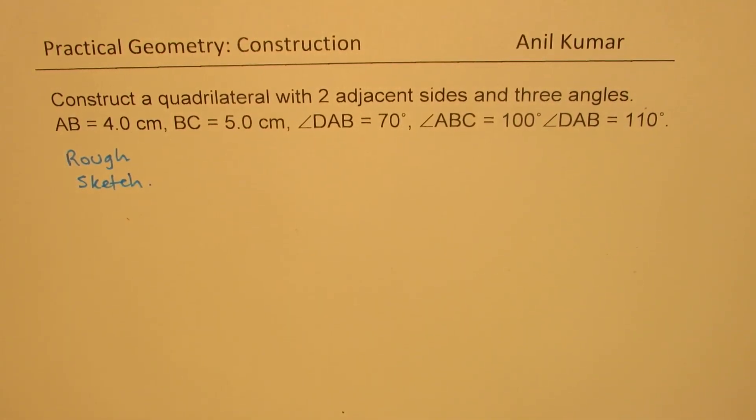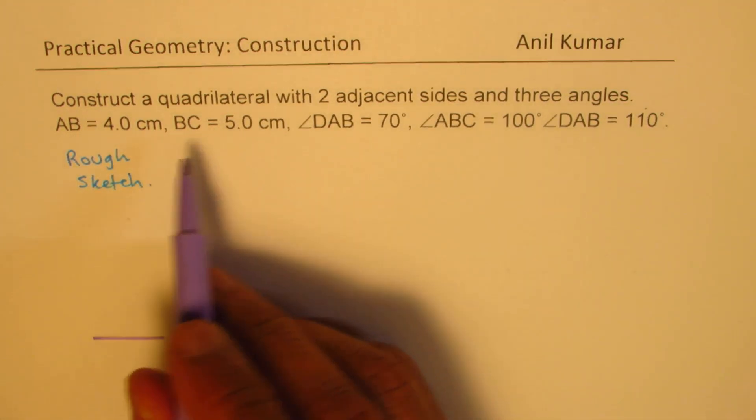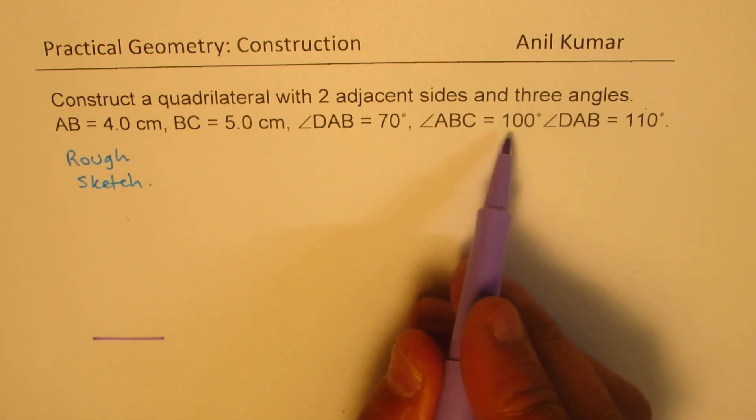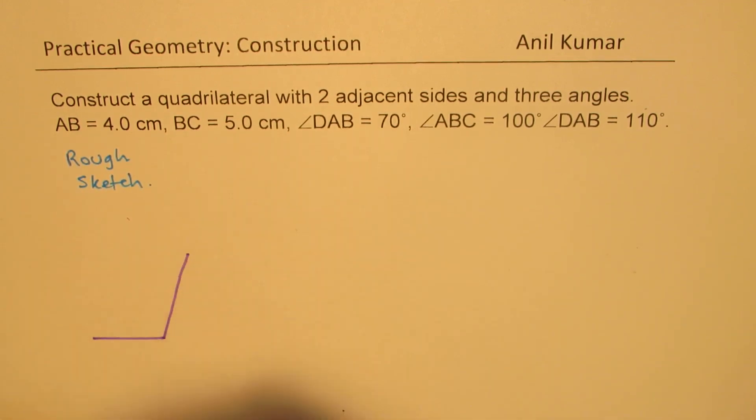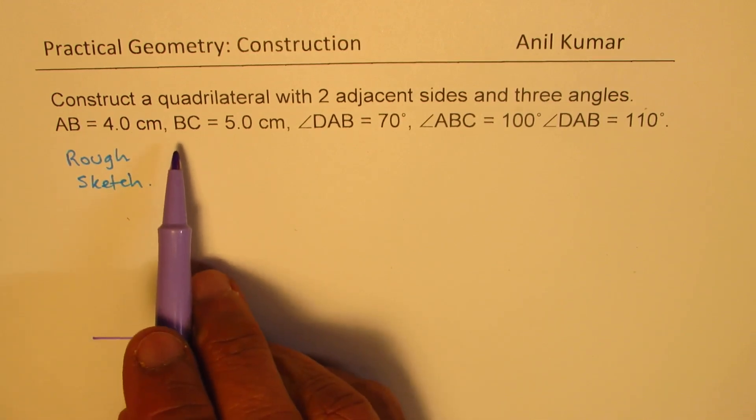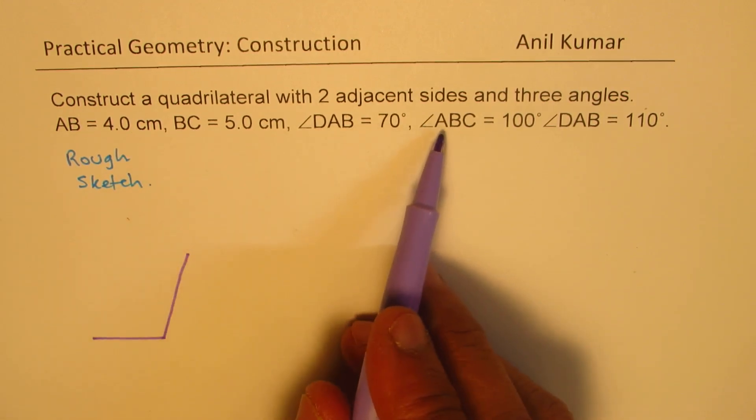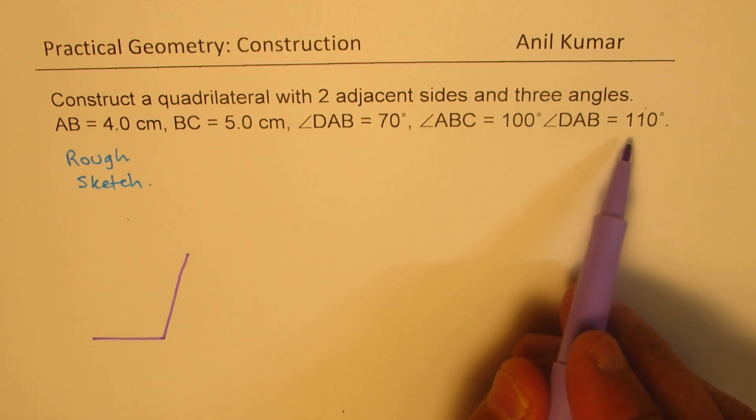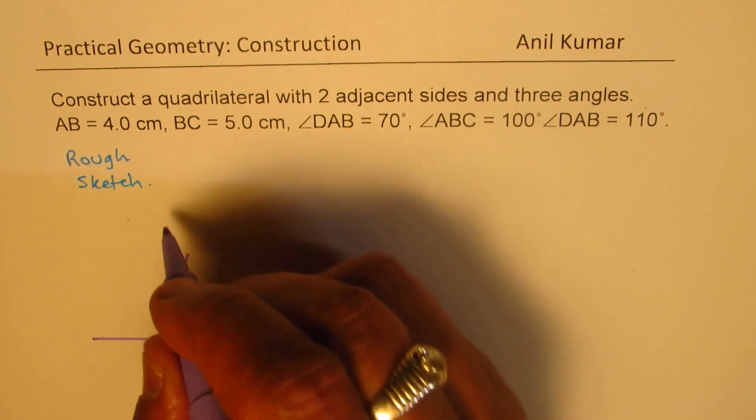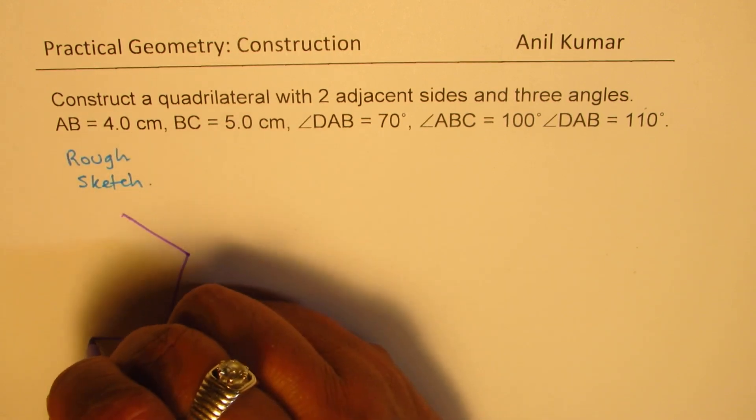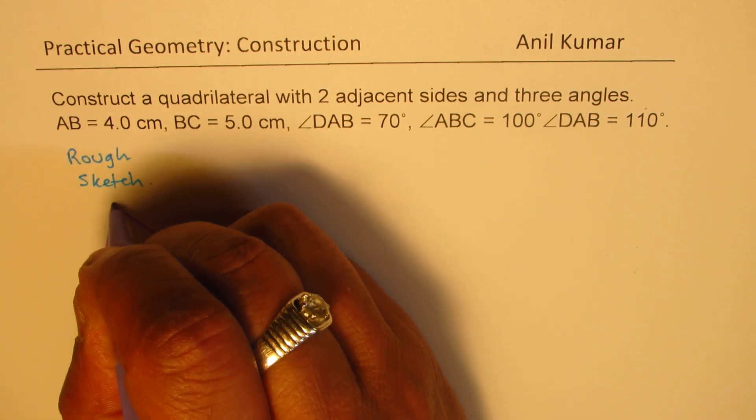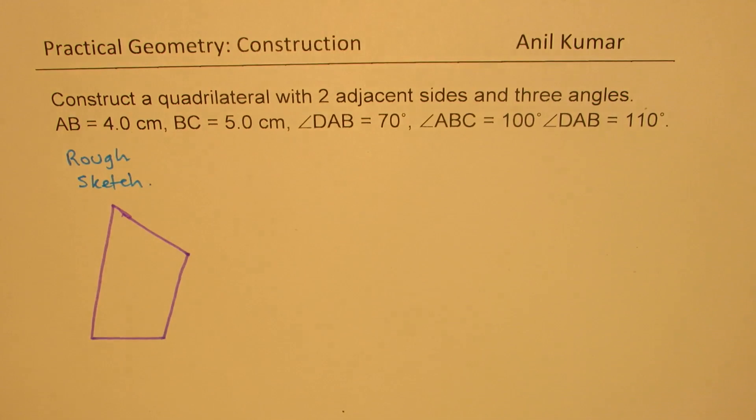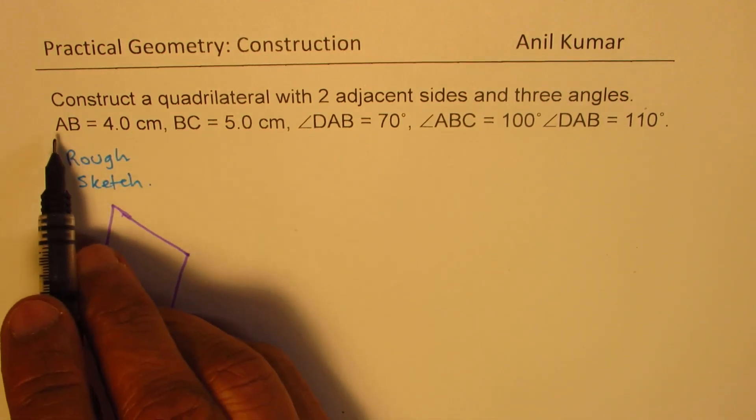So in this particular case, we are given two adjacent sides, AB and BC. Angle ABC is 100, so it's more than 90. And angle DAB is given. So let's just sketch this first, and then we will figure out what is given so that we can work out all the details.